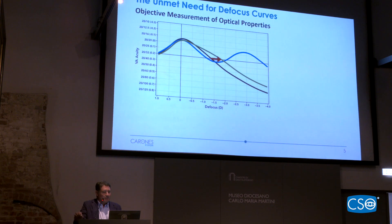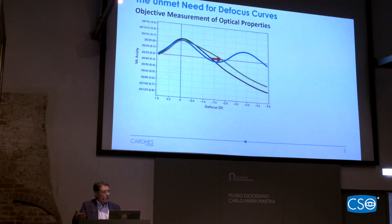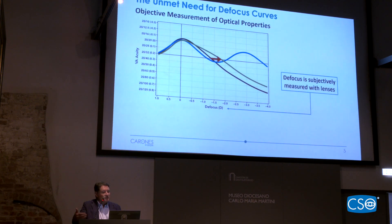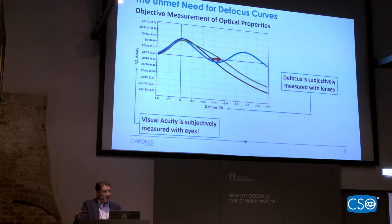What if we were able to objectively measure the optical properties — meaning without going through the subjectivity of measuring not just optics but also patient-related features like pupil size, light conditions when measurements are taken, or the actual distance at which measures are taken, which may also introduce bias? Focus curves are subjectively measured with lenses, giving the diopters eyes can read with or without correction, and visual acuity is subjectively measured with eyes — and this is the biggest difficulty to overcome if we want to objectively measure the optical properties of eyes.